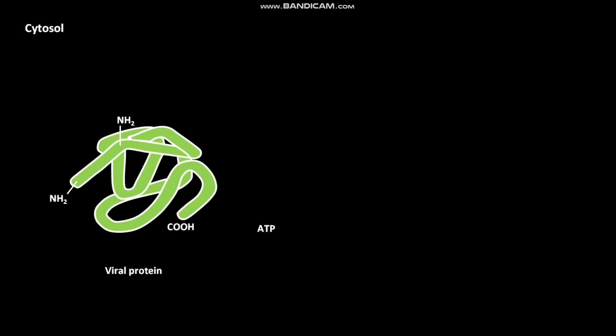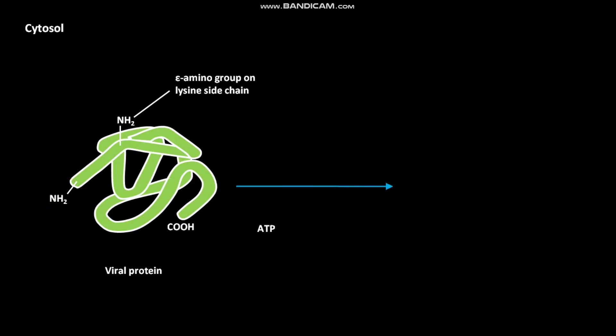Like all other proteins, viral protein also has an amino terminus and a carboxyl terminus. Near the amino terminus of the viral protein, an epsilon amino group on a lysine side chain is present. In the presence of a ubiquitinating enzyme complex, several ubiquitin proteins are covalently linked to the epsilon amino group on the lysine side chain of the viral protein. This process requires ATP hydrolysis.